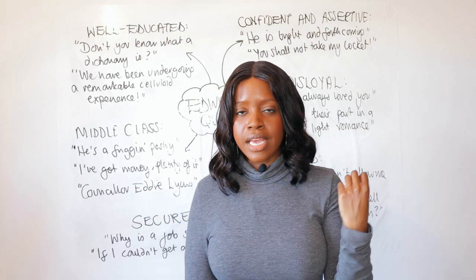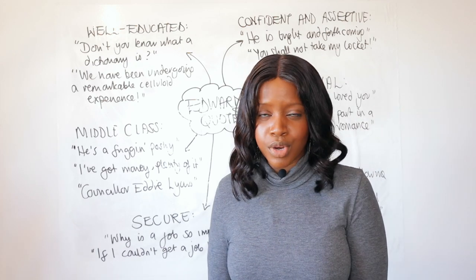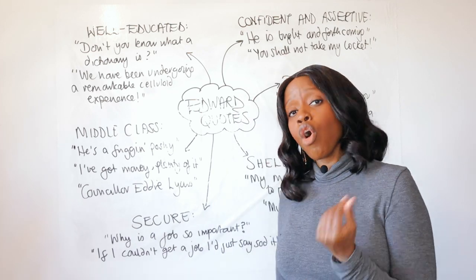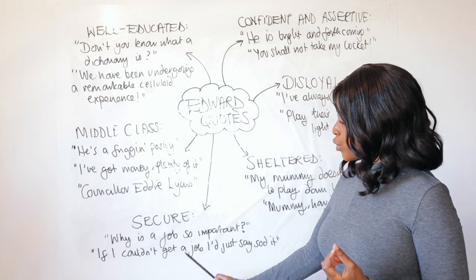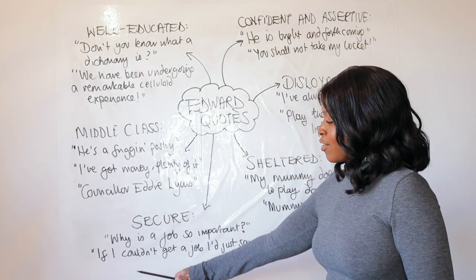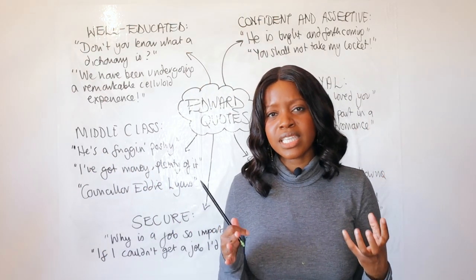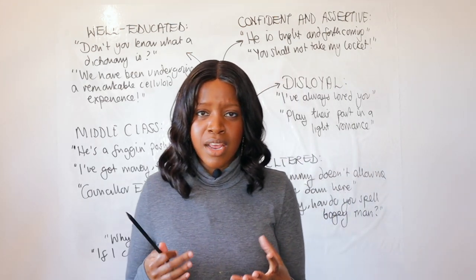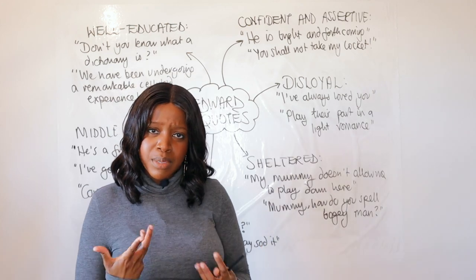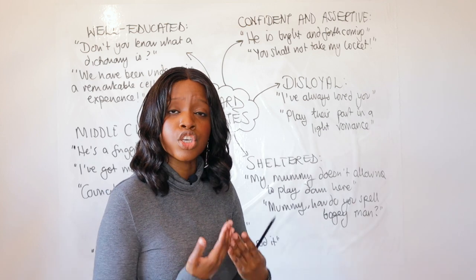Edward saying 'Why is the job so important?' is a very middle class thing to say — it illustrates his security. He doesn't have to worry about getting part-time jobs because he has options. He later makes a joke, frivolously stating: 'If I couldn't get a job I'd just say sod it and become a bohemian.' Again, we can see his life isn't hand-to-mouth. He doesn't think 'I need to get a job in order to survive' — for him, life is a bit smoother and easier.